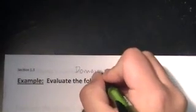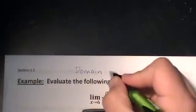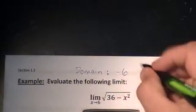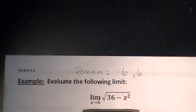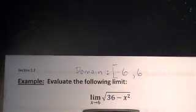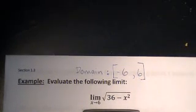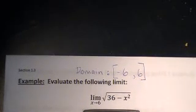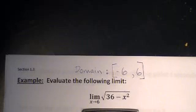If we wanted to talk about the domain of this, the values of x that can be placed into the function, the smallest value of x that we can place into this is actually negative 6. The largest value of x that we can place into this is positive 6. Now we can plug in negative 6, and we can plug in positive 6. So I'm using brackets to indicate that those two values are included.